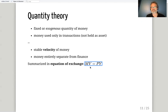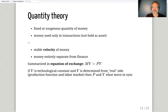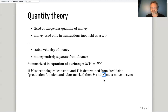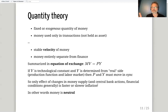We summarize these assumptions in the equation of exchange: M times V equals P times Y — the stock of money times its velocity equals the price level times the quantity of output. This form is associated with Irving Fisher. If V is a technological constant and Y has already been determined from the real side of the economy, then P and M must move in sync. There's a typo on the slide — a Y that should be an M — but the implication is: any change in the money supply can only generate inflation or deflation.